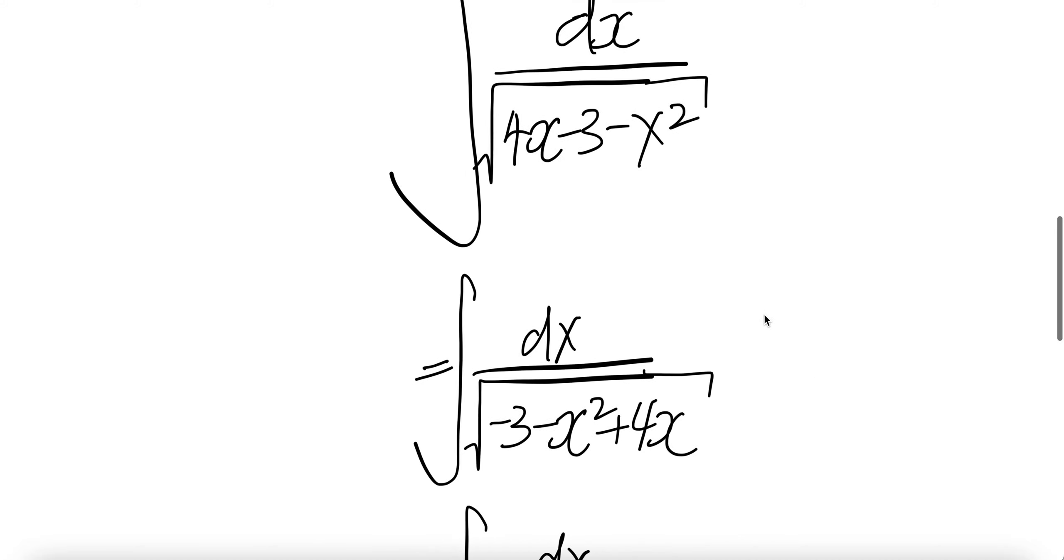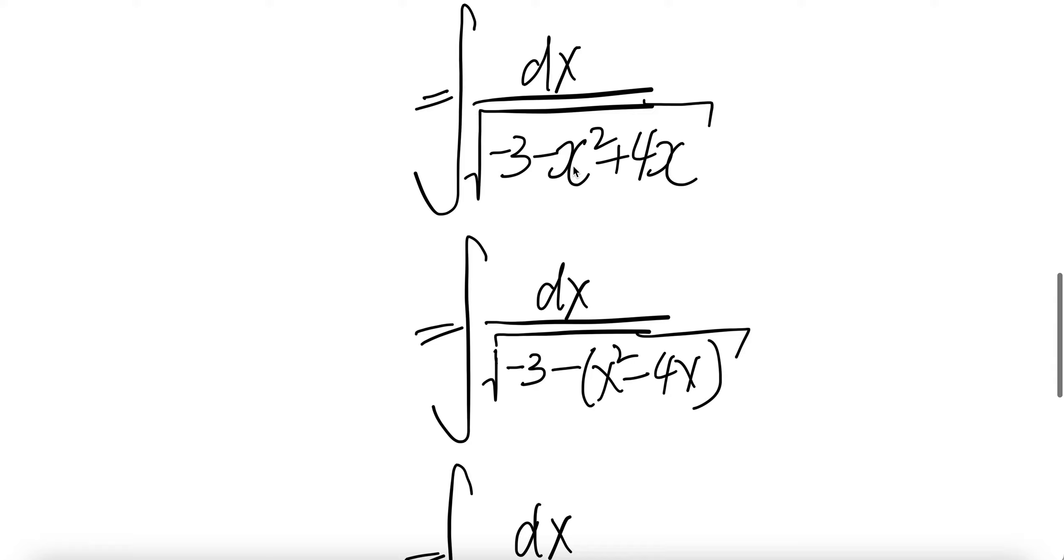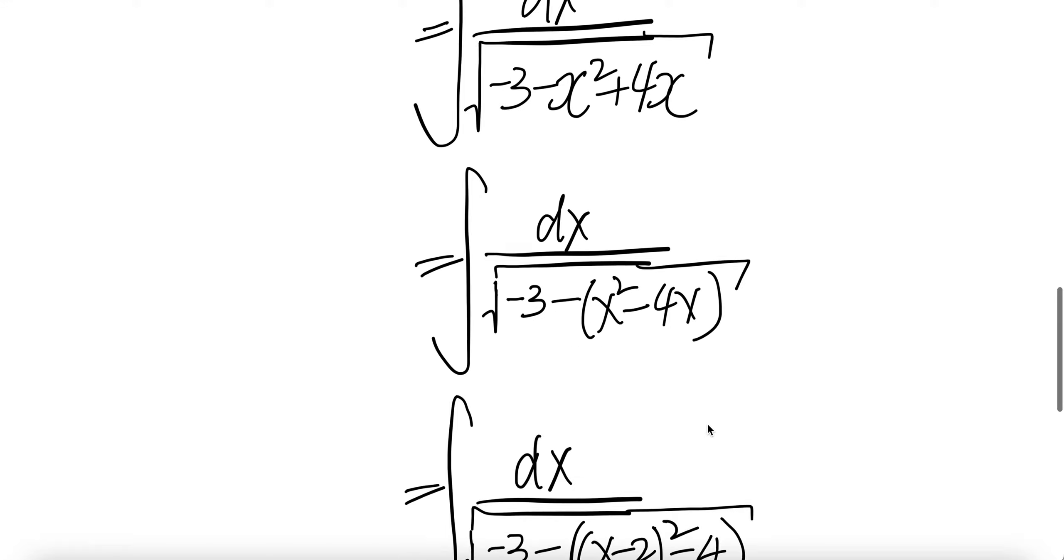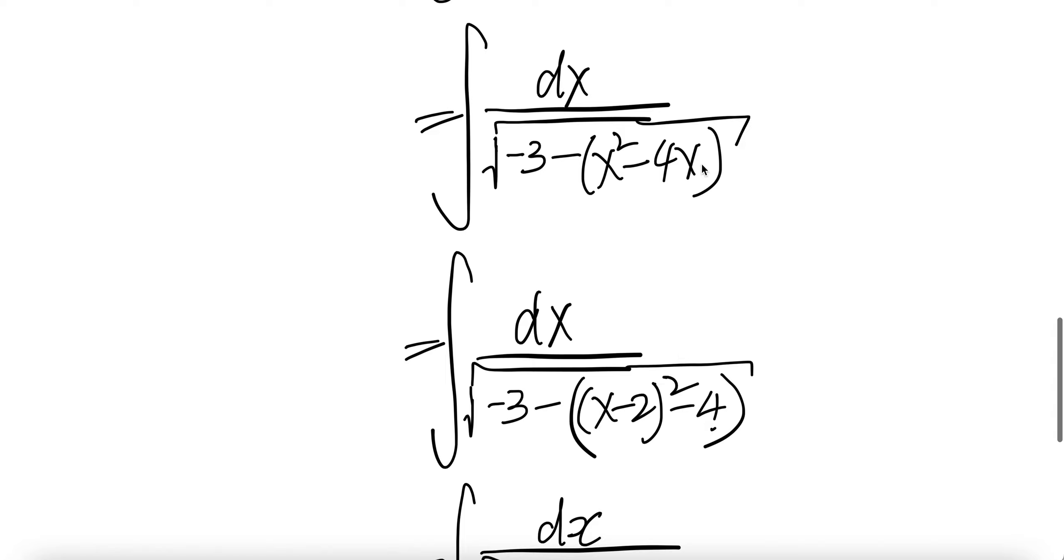Let us write minus 3 here and put minus x squared and then plus 4x. Let us factor out the minus 1 and we get x squared minus 4x. Now let us complete the square.